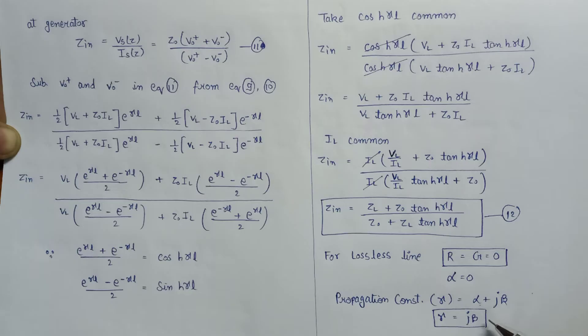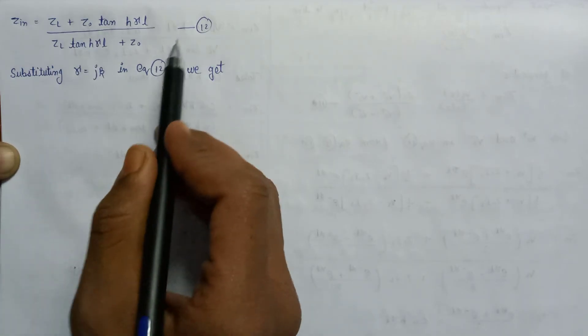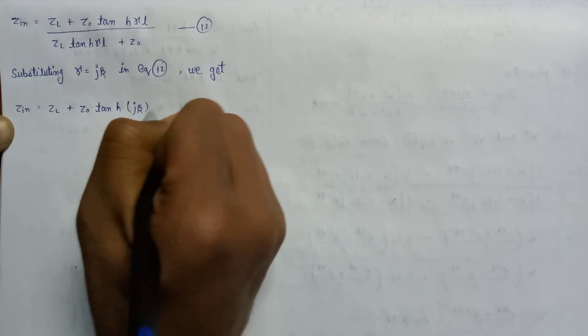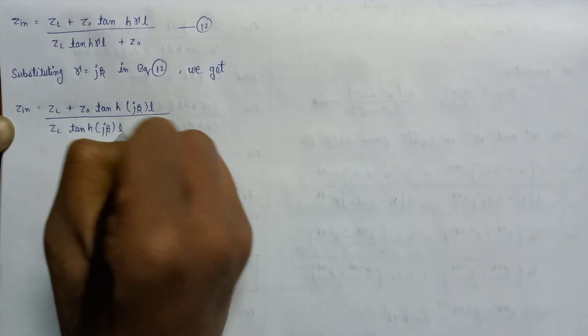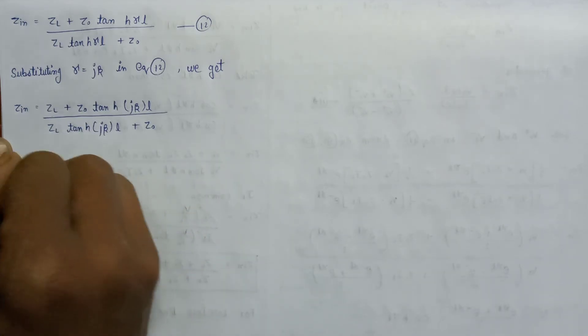Now we will substitute the value of gamma equals j beta in equation number 12. Here is equation number 12, and on substituting gamma equals j beta, we get our input impedance equals Z_L plus Z_naught times tanh(jβl) over Z_L times tanh(jβl) plus Z_naught.